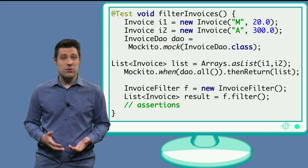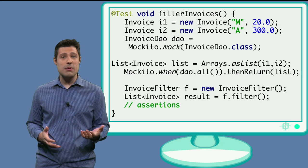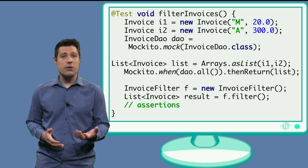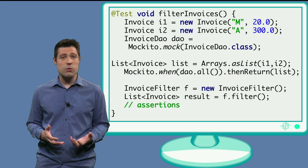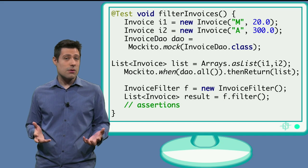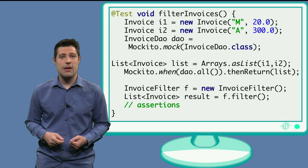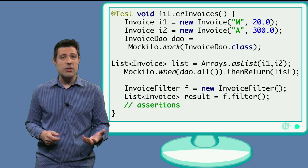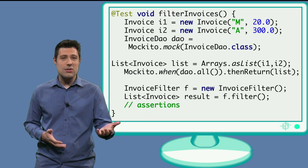The second part, as discussed in the previous video, is about setting the behavior we expect. And for this mock, what we wanted to do is to return a list of invoices when the method all is invoked. And this list of invoices can now be just an in-memory list. Way simpler than a database.